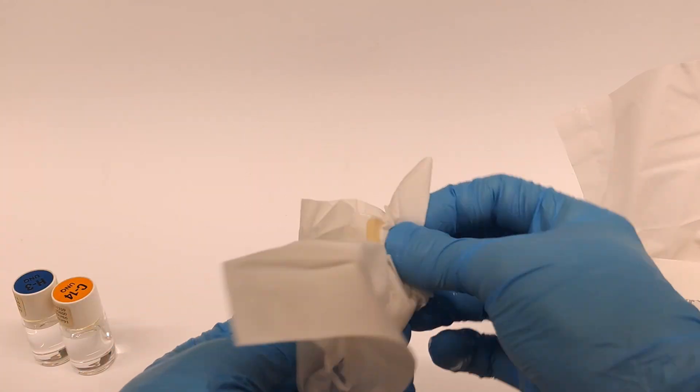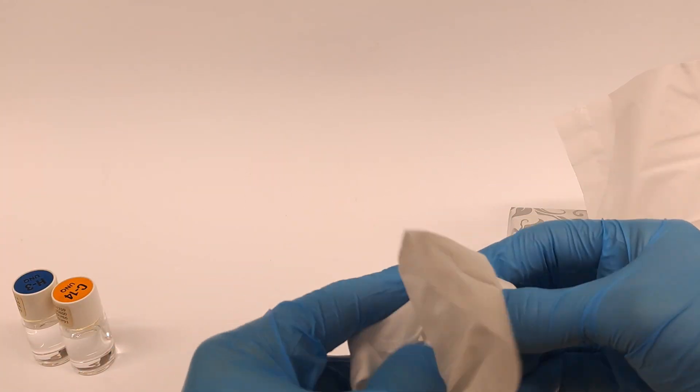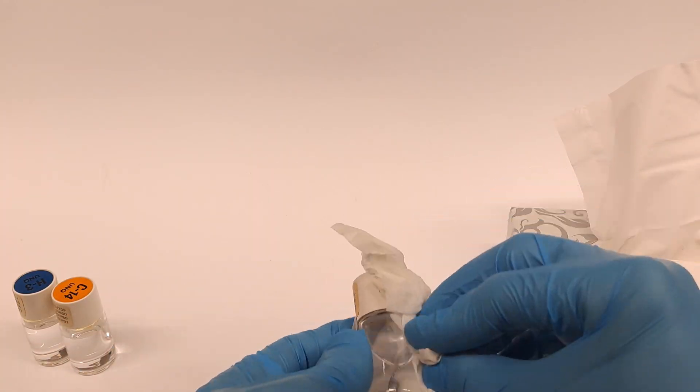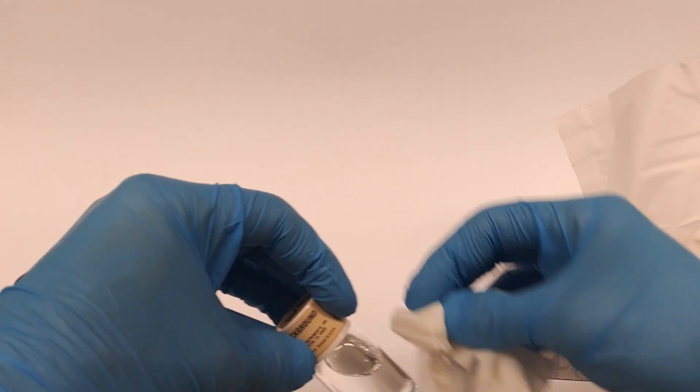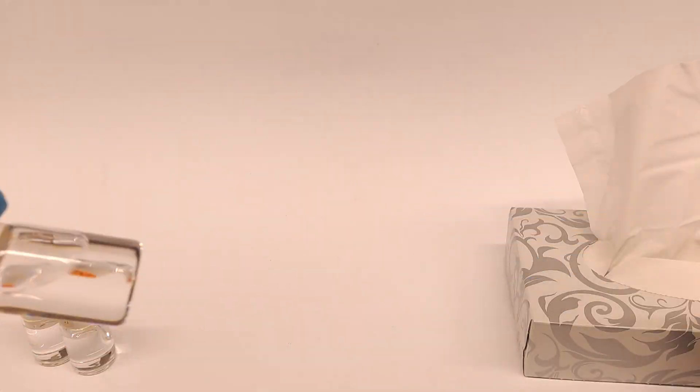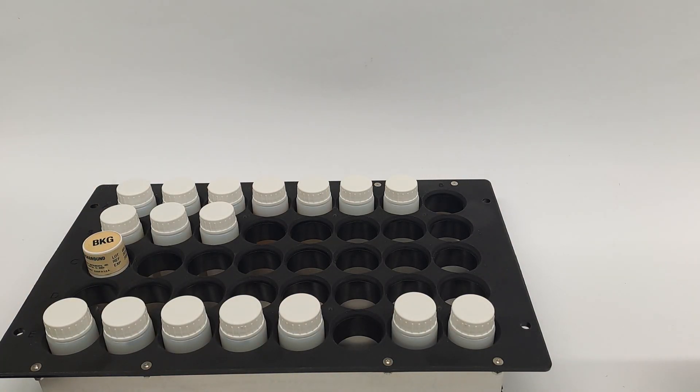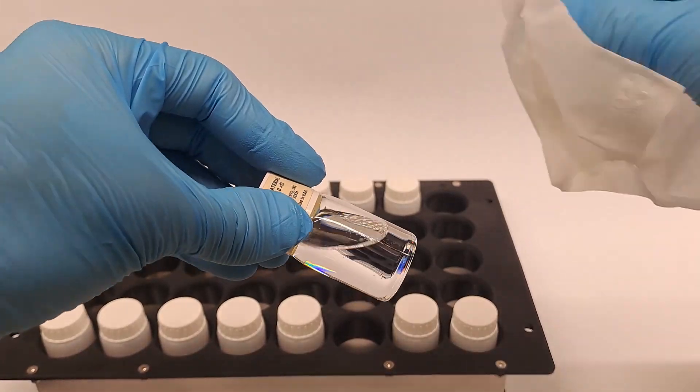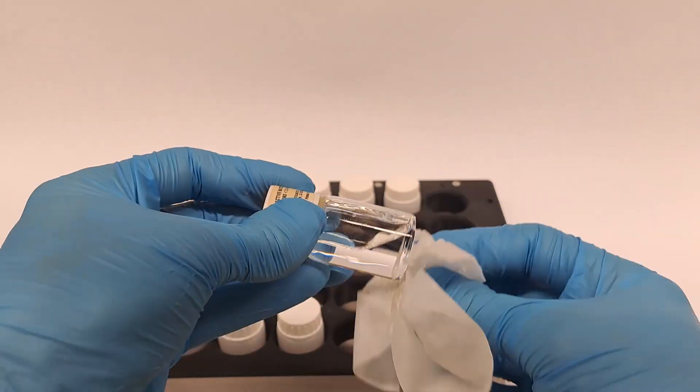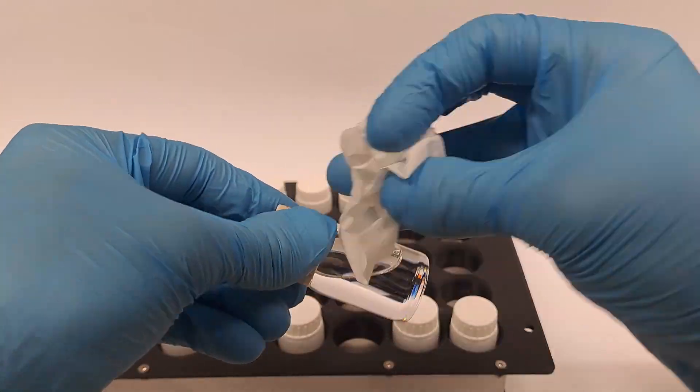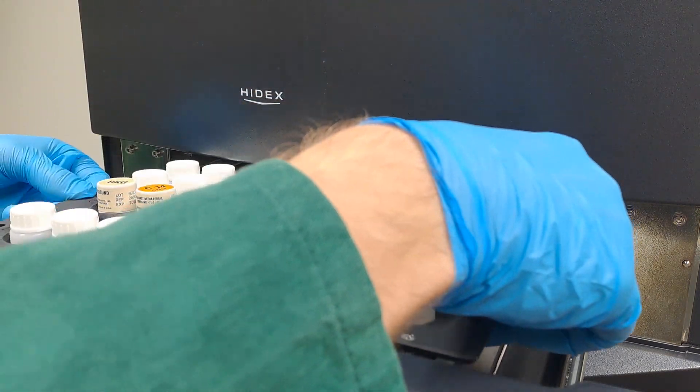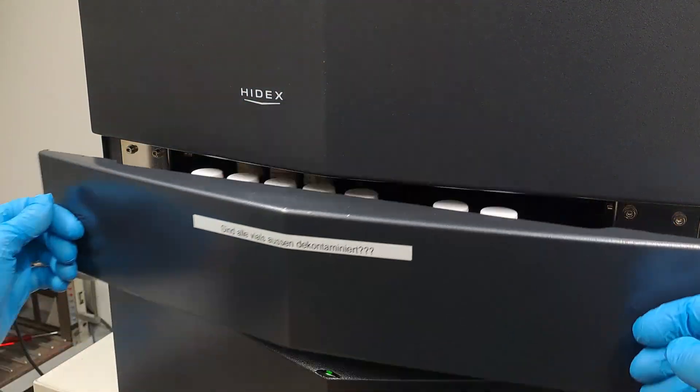Before the standards or any other sample can be placed in the sample tray, it must be ensured that these vials are not contaminated from the outside. Radioactive contamination would be particularly bad because it would make the measurement results completely unusable. Therefore, all the vials are always thoroughly cleaned with ethanol, especially at the top and the bottom where the gripping arm attaches. The clean tray can now be placed into the measurement device with the clean vials.